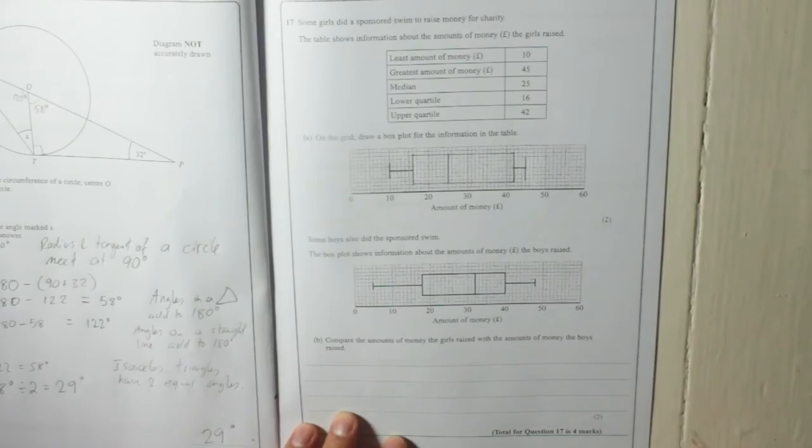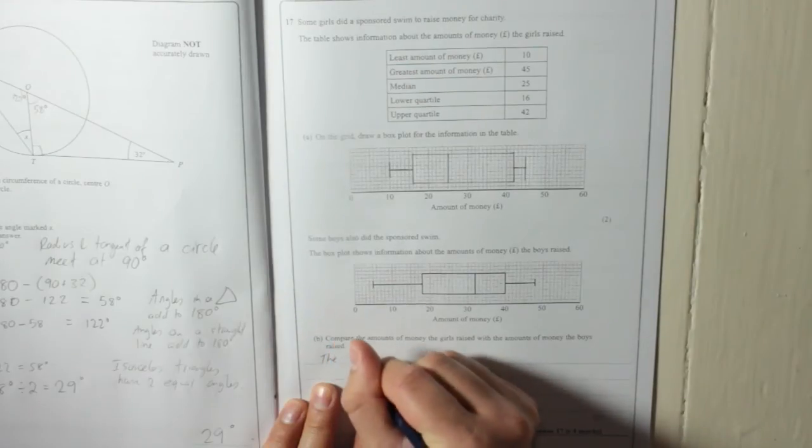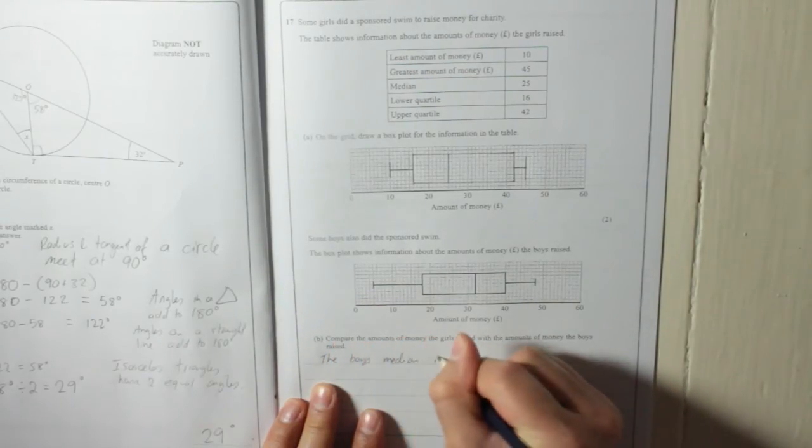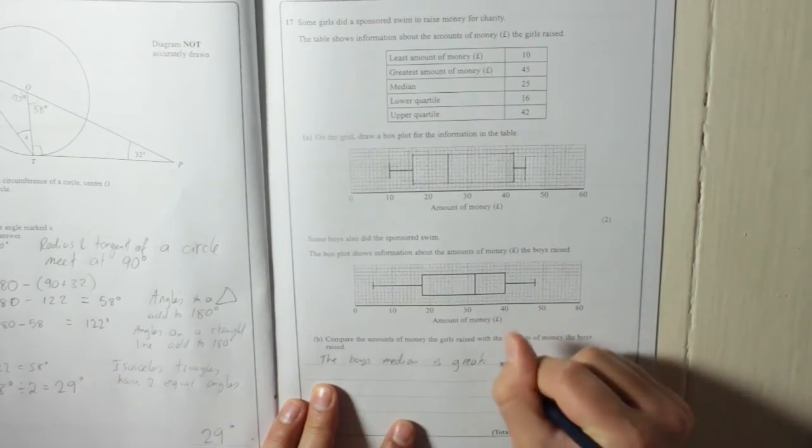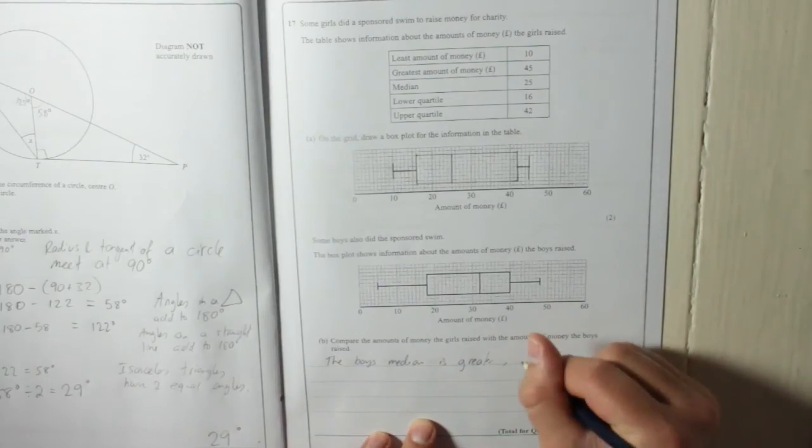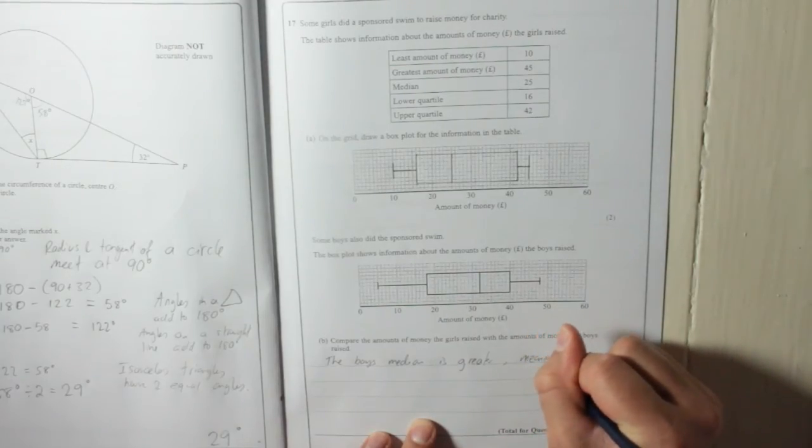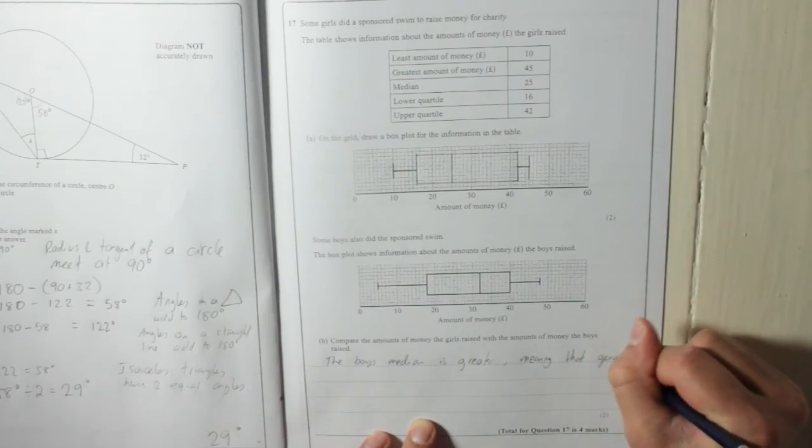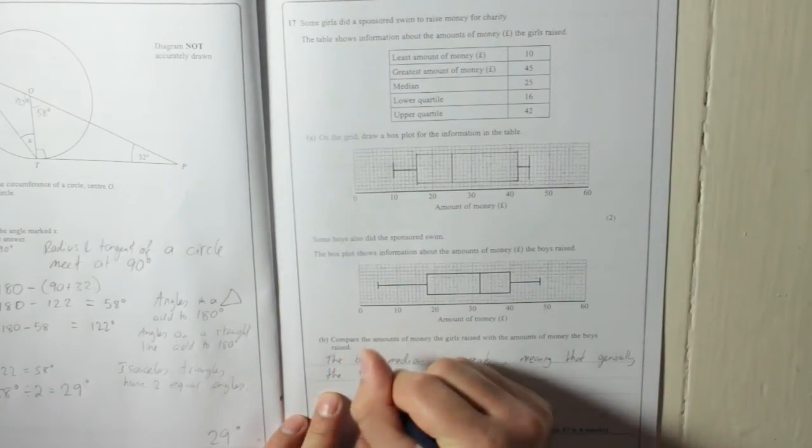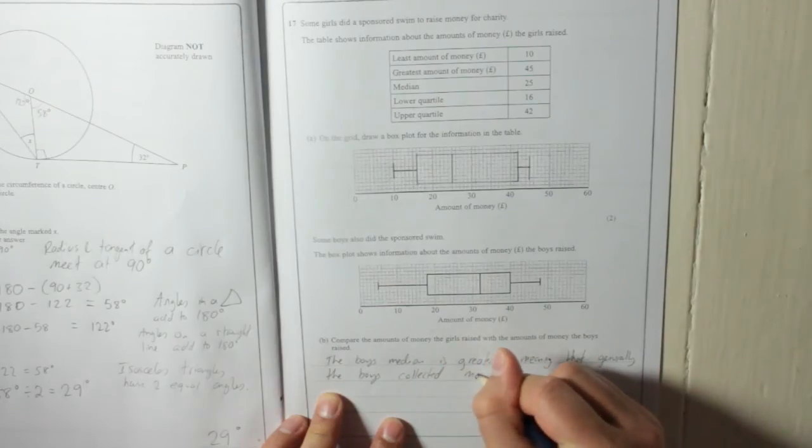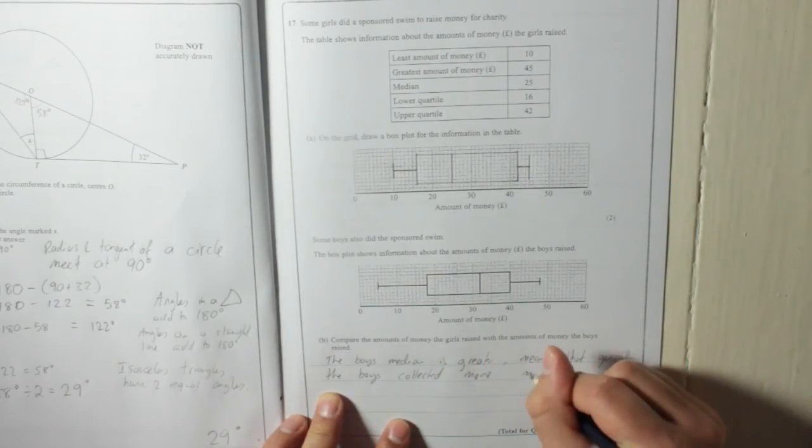First of all, I'll say something about the medians. So, here's the boys. They've got a higher median. So, the boys' median is greater. And then you've got to say something about what that actually means in context. So, just meaning that, generally, the boys collected more money.